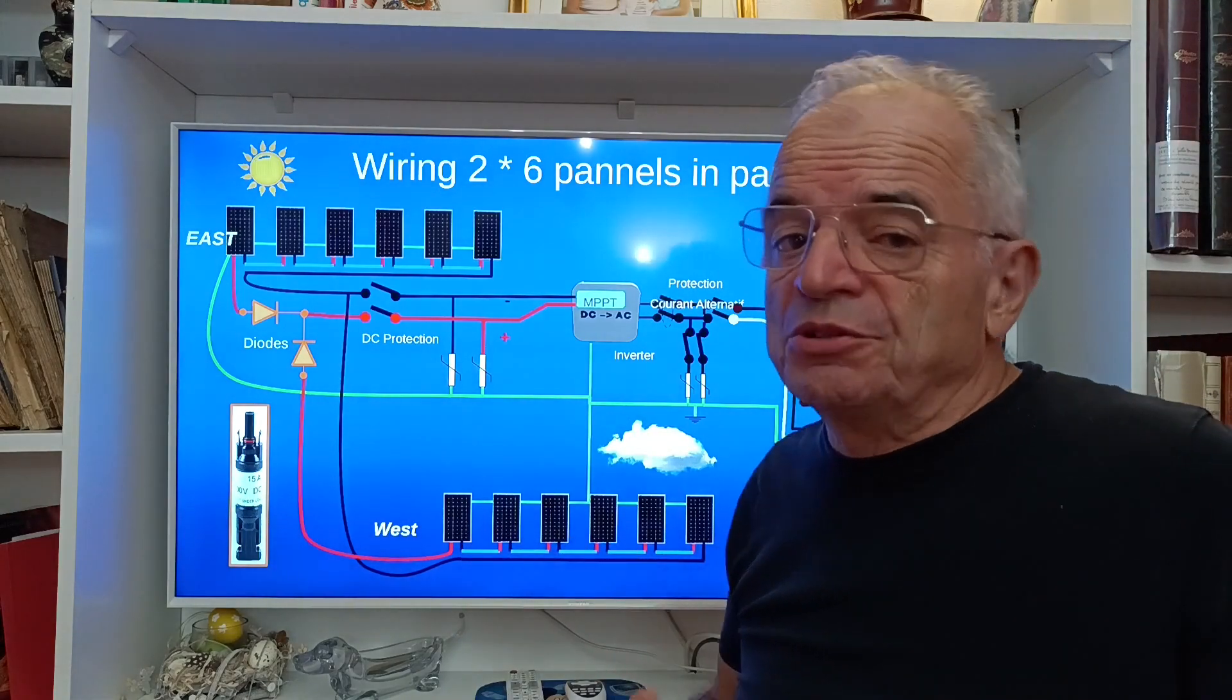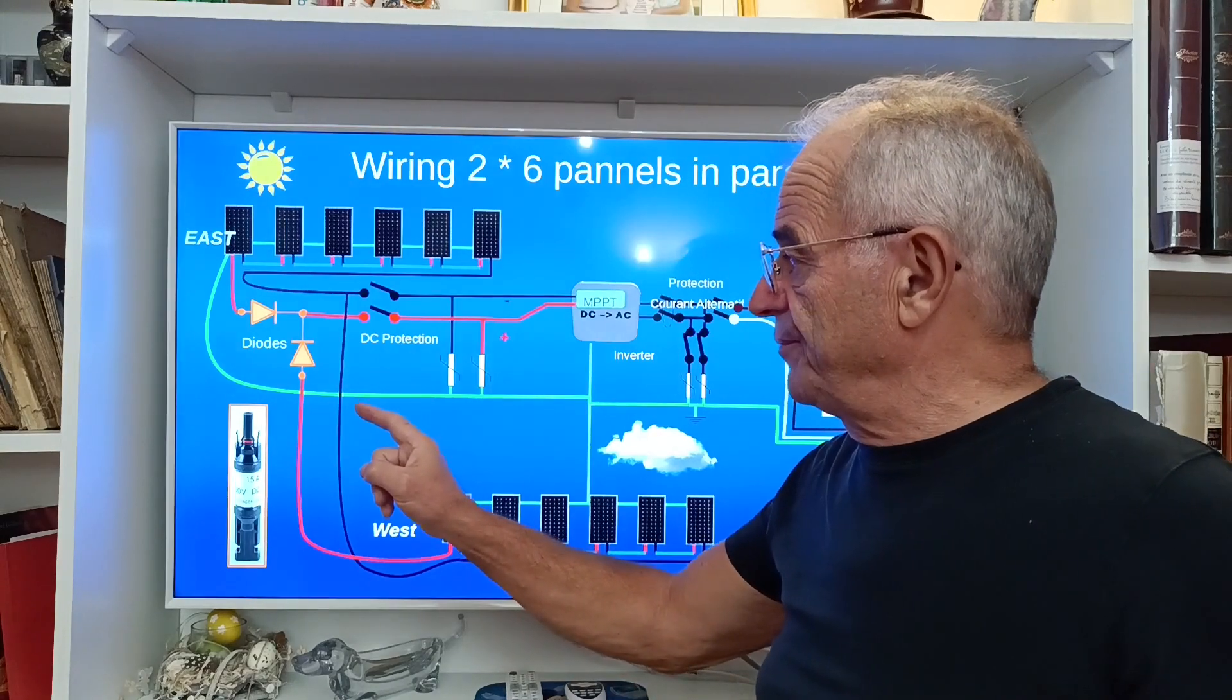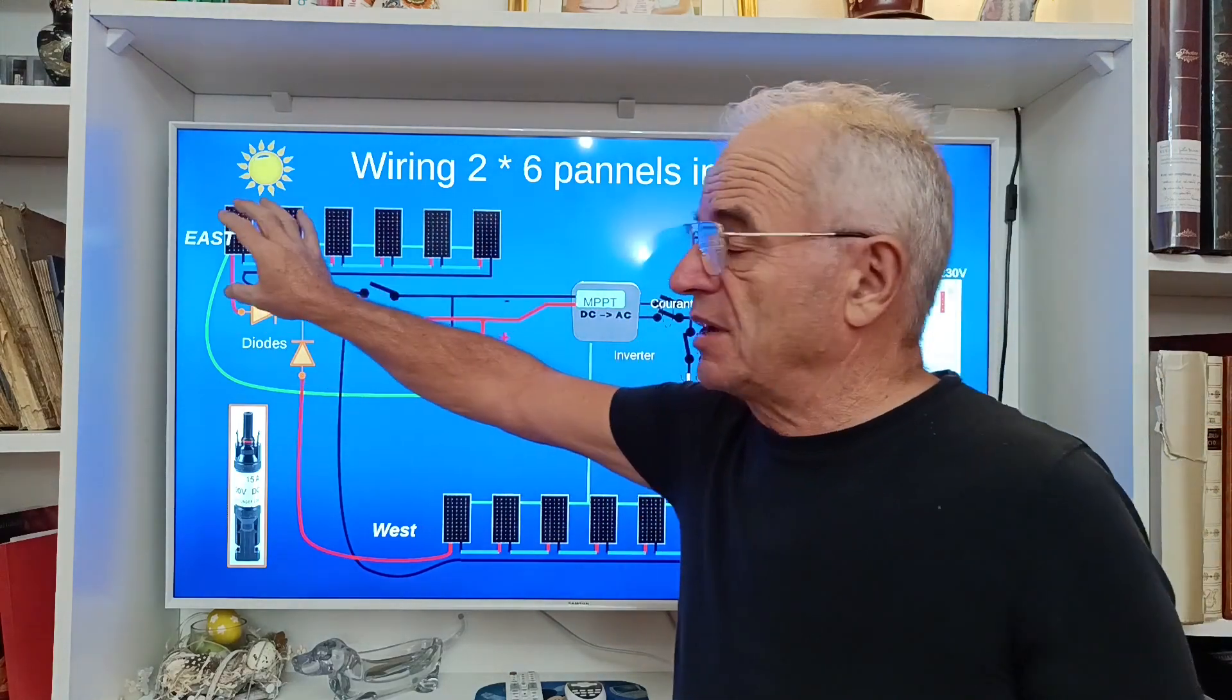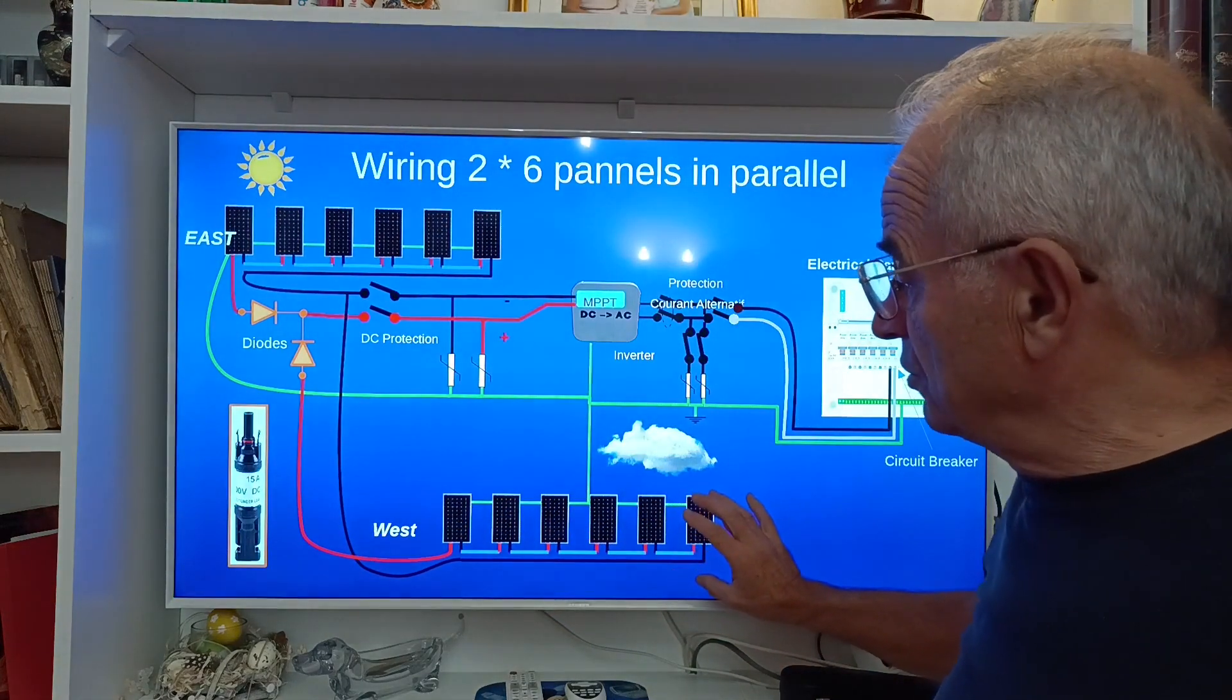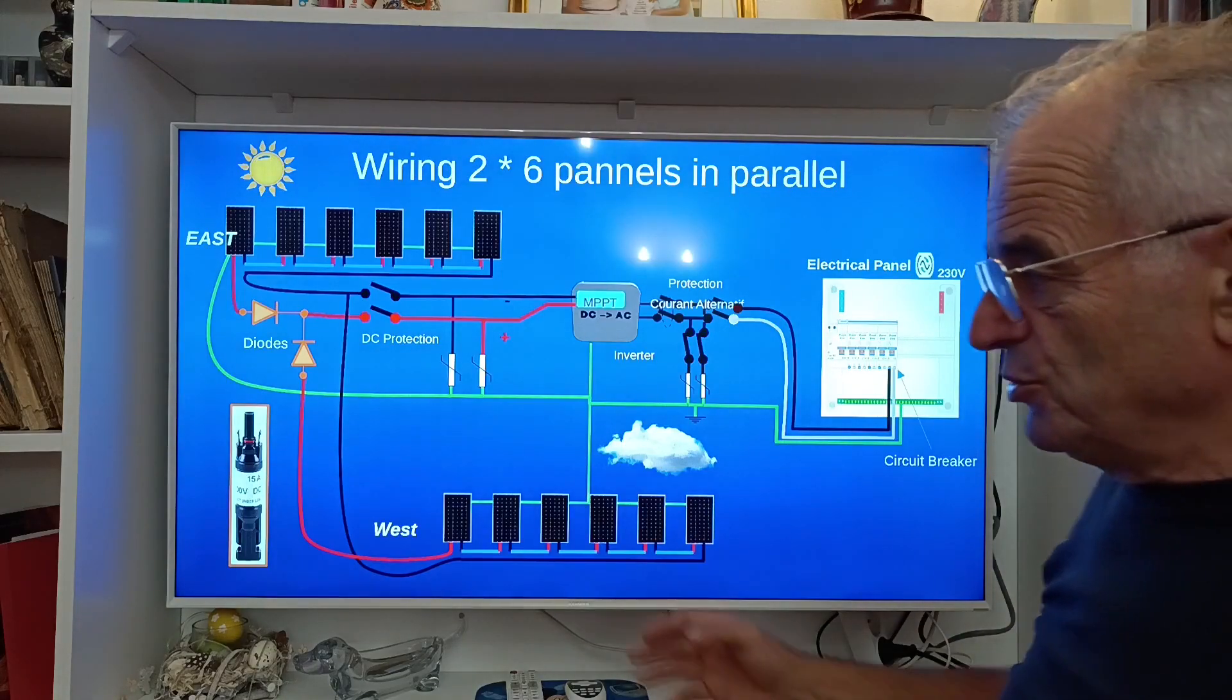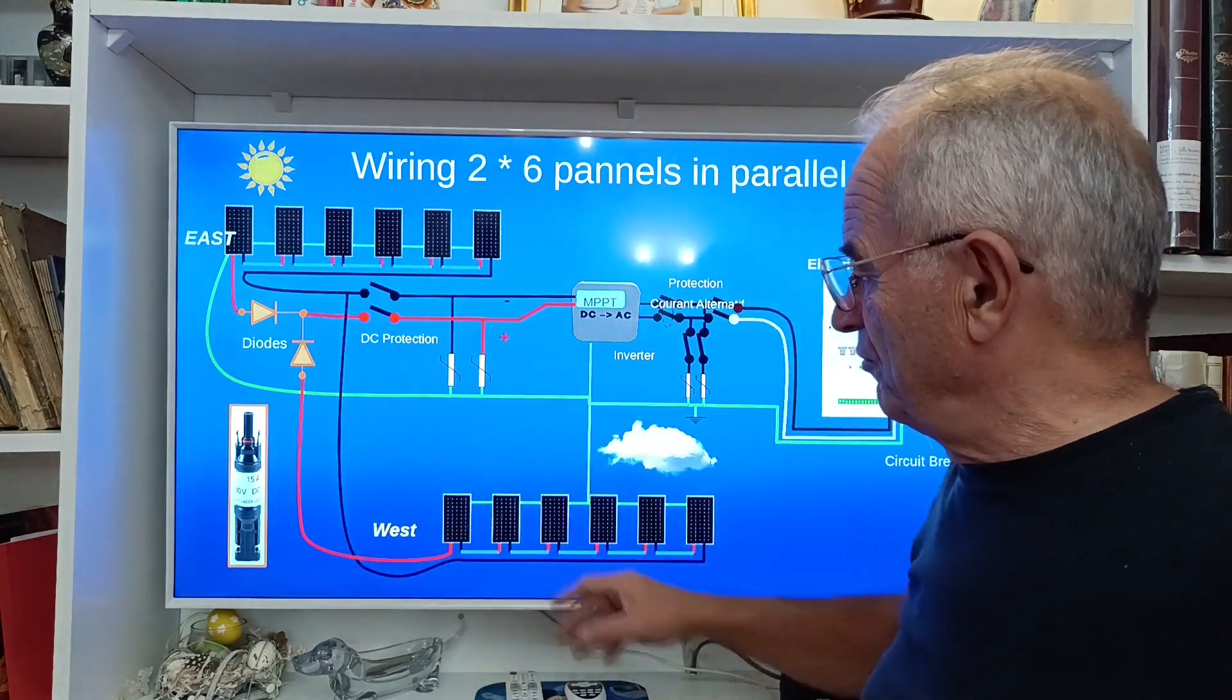The only drawback with such configuration is that if the voltage of this one is lower than this one, the tracker will track the characteristics of this group, and you are not in an optimal position to extract the maximum of energy of this group. But this suppresses the risk of fire.